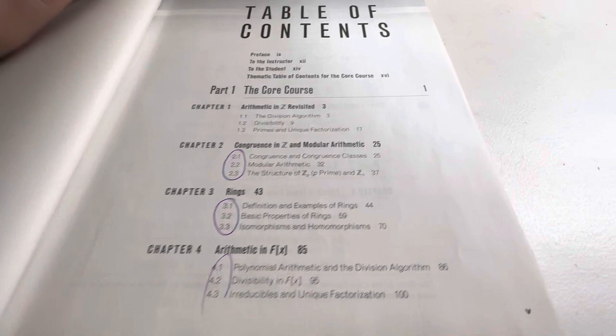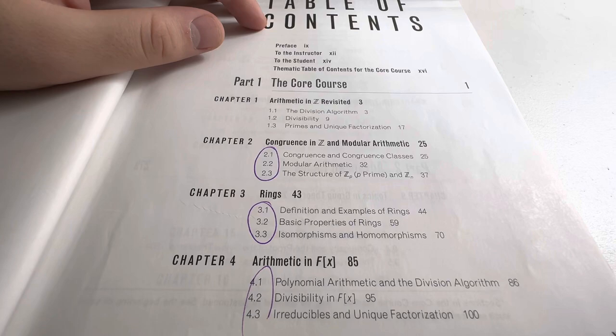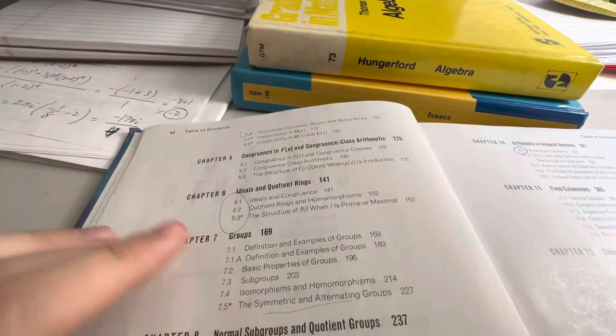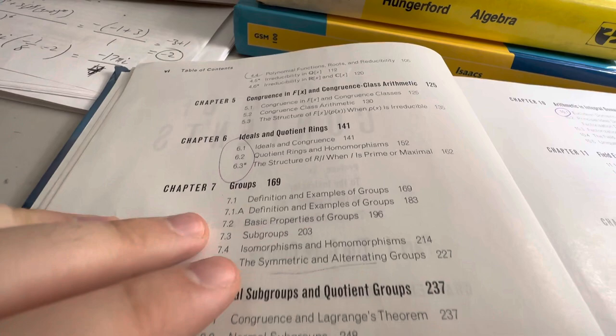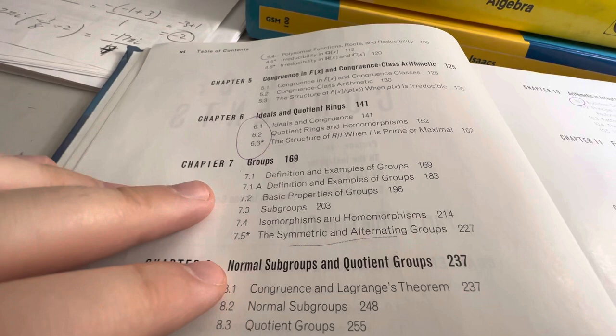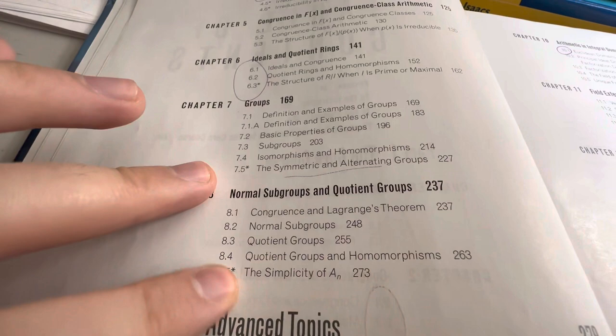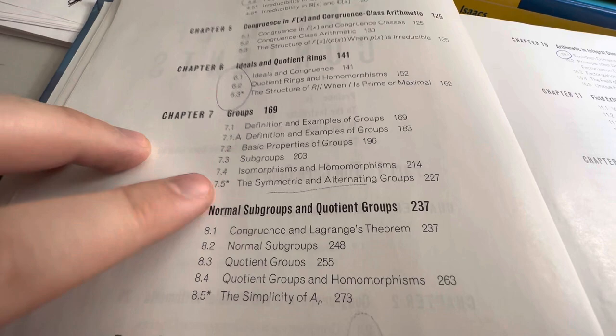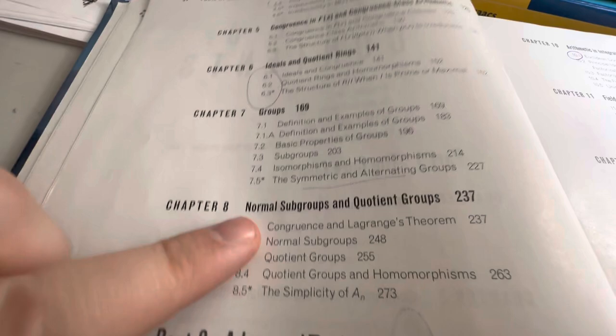And then we have arithmetic and f(x), where f(x) is a polynomial ring. Although I think in this book it also talks about fields and polynomial rings over a field. So we did those. We did chapter 5, I'm pretty sure. We definitely did chapter 6, which is about ideals and quotient rings. And then chapter 7 is where we start talking about groups, which doesn't feel right. But it's just the way it was. Chapter 8 is about normal subgroups, quotient groups. And I remember when I went through the undergrad course of this, we picked and chose subjects from chapter 7 and 8. We didn't do everything. Like, we skipped the alternating group.